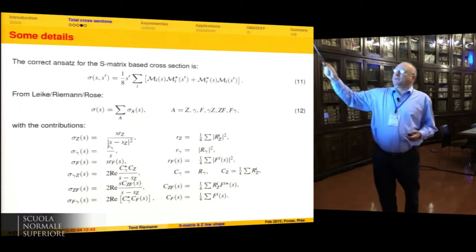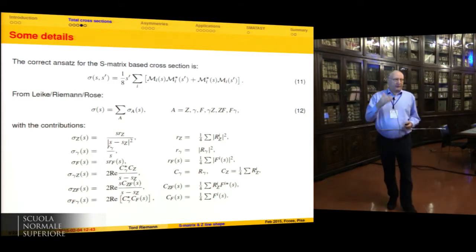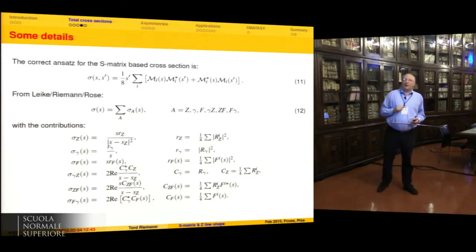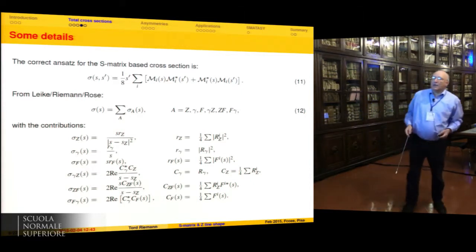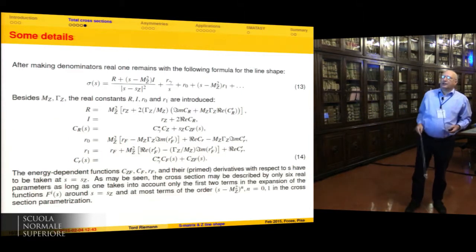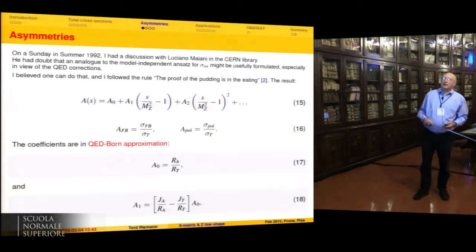Here is shown how one can formulate the effective born approximation for initial final state interferences. If you are very accurate, this plays a role. Then I show you how to calculate all these things, but that is not so interesting at the moment.